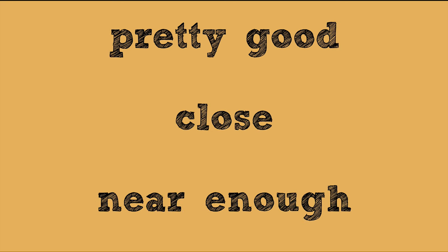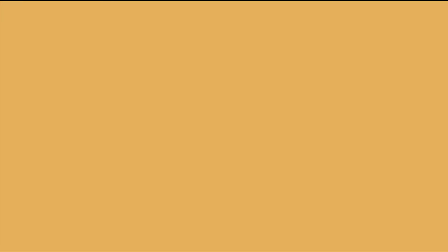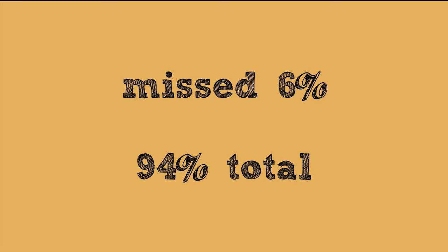Now imagine that you took a test and your teacher told you that you did pretty good, or that your answers were close to correct, or that you were near enough to the grade you wanted. You'd probably be really annoyed with how vague this is. It's easier to know how you performed on a test if your teacher says you missed 6% and had a 94% total on the test. Those numbers are more informative and specific.